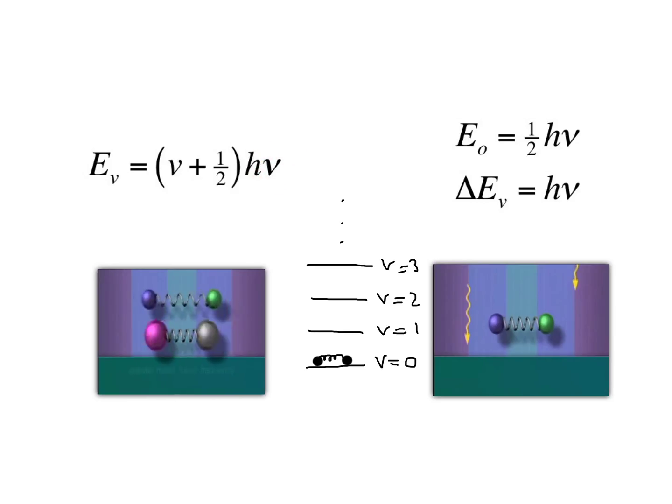When I have larger masses at the ends of my spring, I will have a lower vibrational frequency. When my spring is stronger, stronger bond or a tighter spring, I will have a higher vibrational frequency.